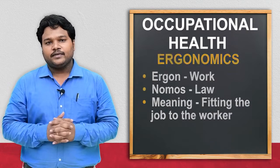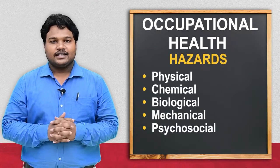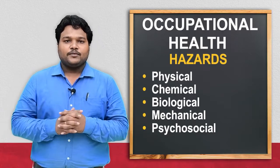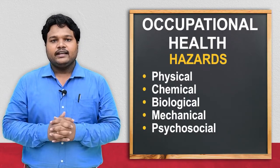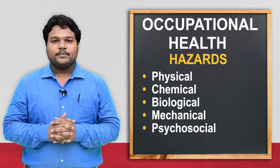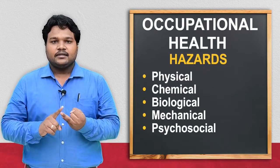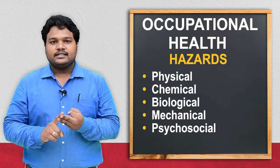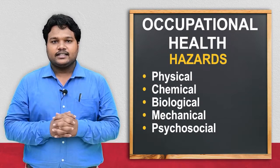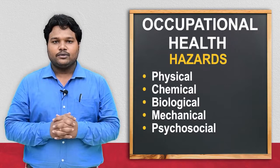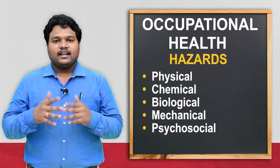After discussing about ergonomics, we are going to discuss about occupational hazards. There are mainly five types of occupational health hazards: physical hazards, chemical hazards, mechanical hazards, biological hazards, and psychosocial hazards. Physical hazards are further classified into heat, cold, vibration, and related factors.